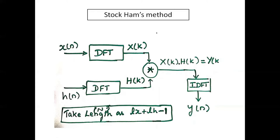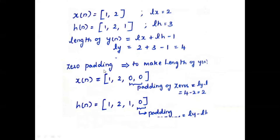We will see the calculation. X of n is equal to 1, 2 and H of n is 1, 2, 1. The first step is to calculate the length of X of n and H of n. LX is 2, LH is 3. The length of Y of n is LX plus LH minus 1, which gives 2 plus 3 minus 1 equal to 4.